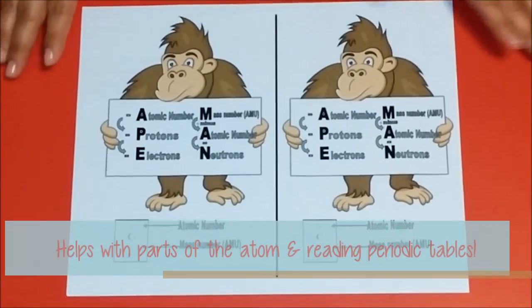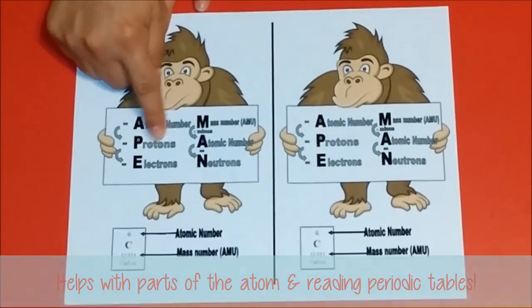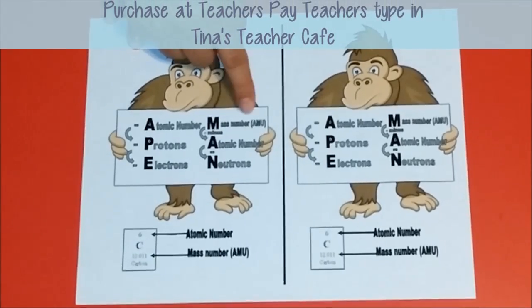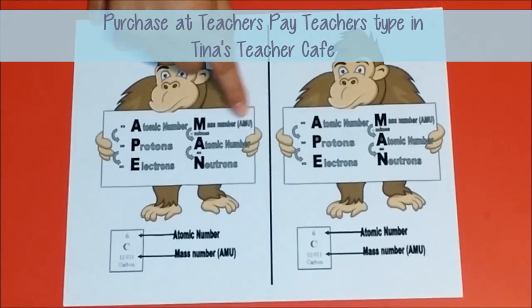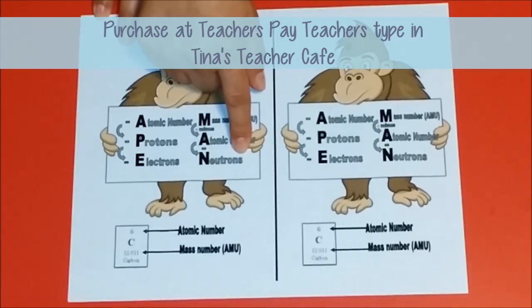Here's how the APE-MAN mnemonic works. You have APE: Atomic number equals protons equals electrons. You have MAN: Mass number, the AMU, minus the atomic number equals the number of neutrons.